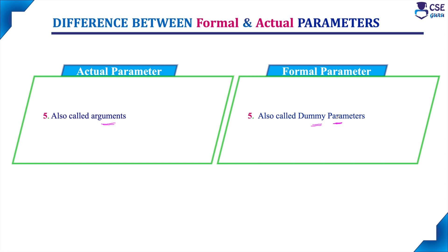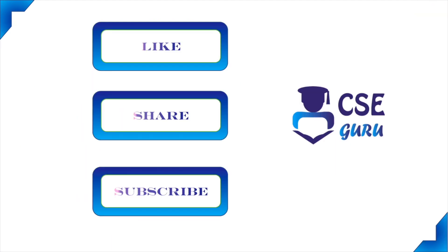In this session, we have discussed the difference between actual parameters and formal parameters. In the next session, we will move on to the next important topic in functions — that is parameter passing techniques. There are two important parameter passing techniques in C: one is called by value and another one is called by reference. Both techniques we will discuss in detail with examples. Thank you for watching this video.